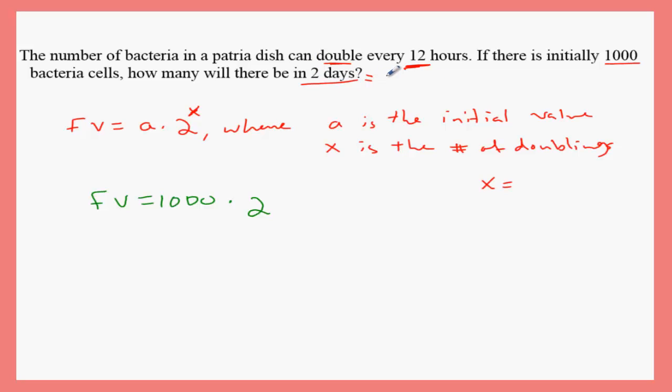This means the number of doublings, how many times the bacteria doubles in this whole entire scenario, we got it by dividing 48 by 12. 48 is the total number of hours over the number of hours in each cycle, which is 12. 48 divided by 12 equals 4.